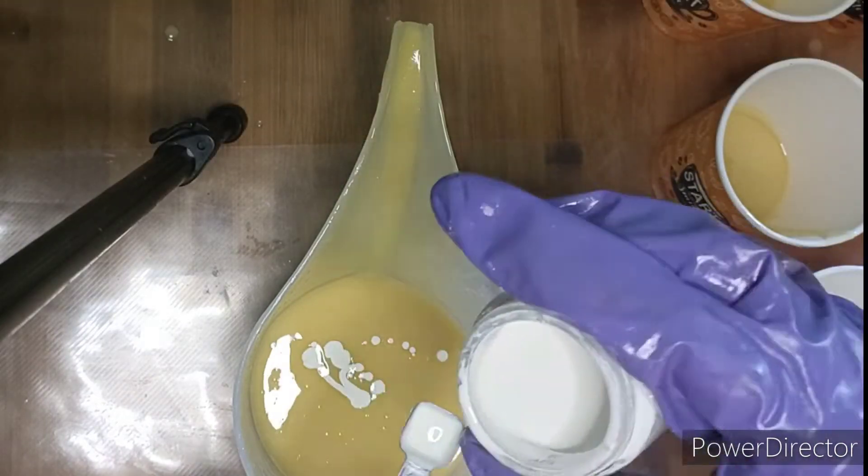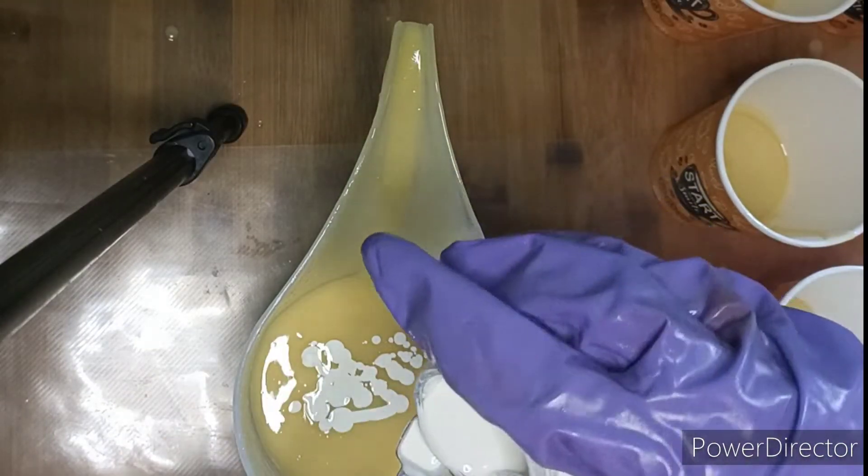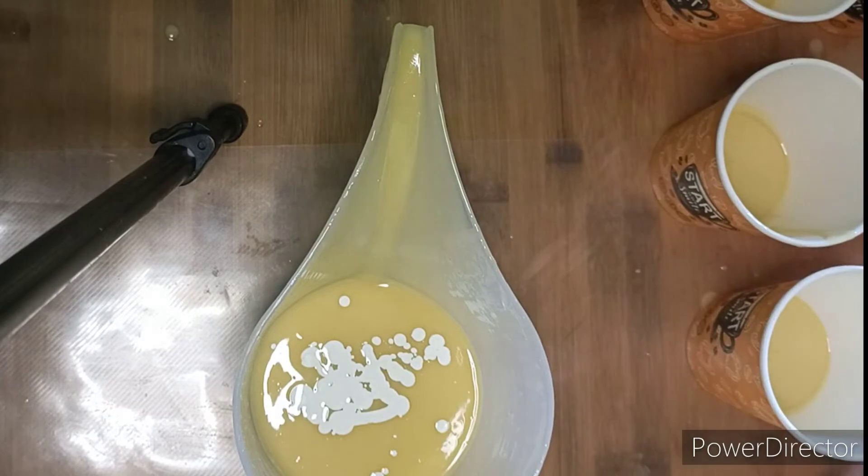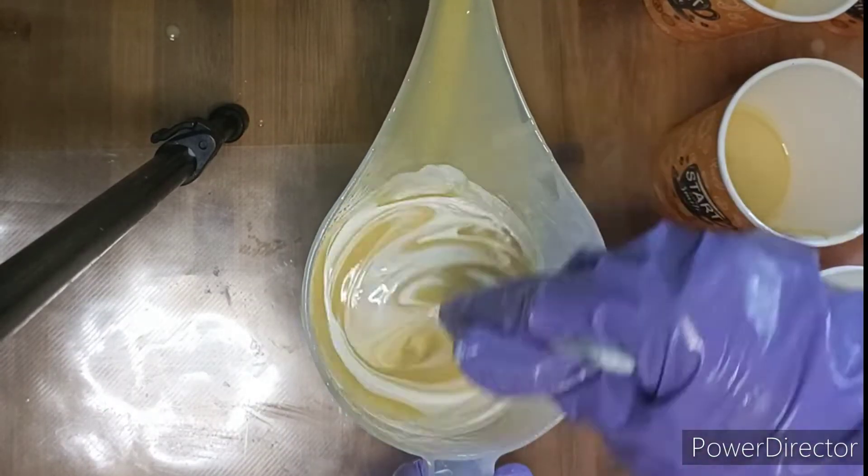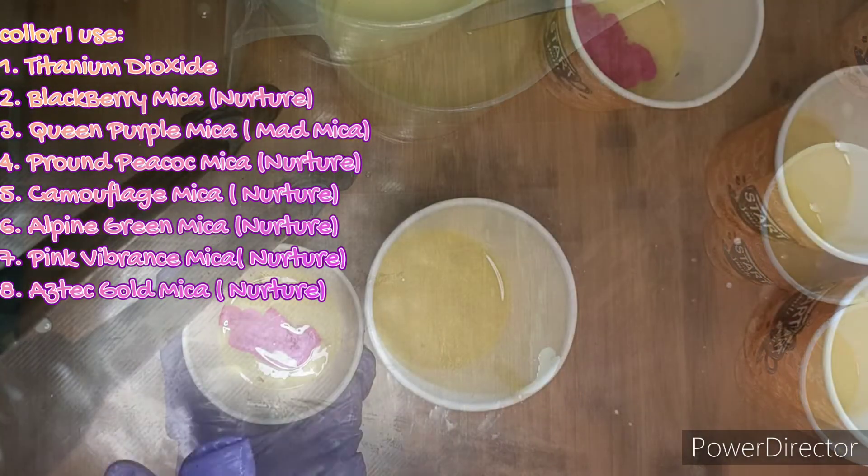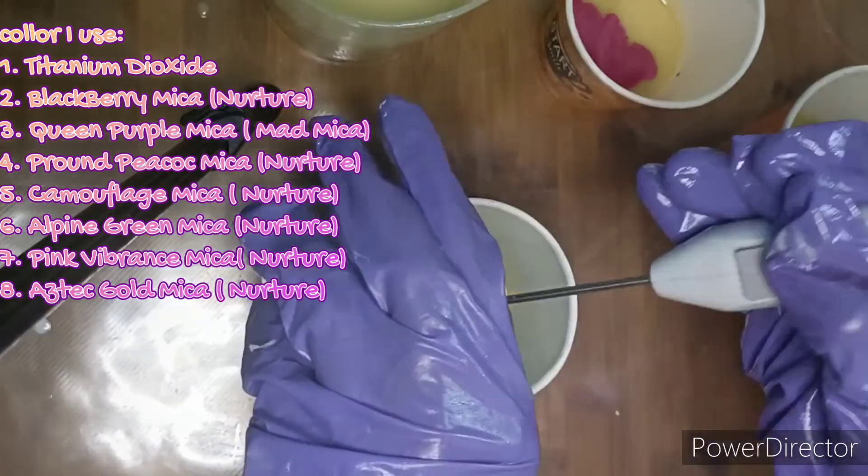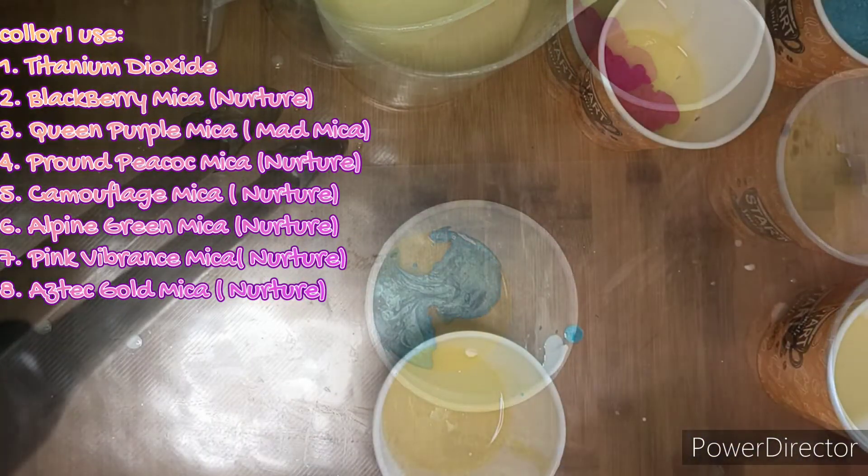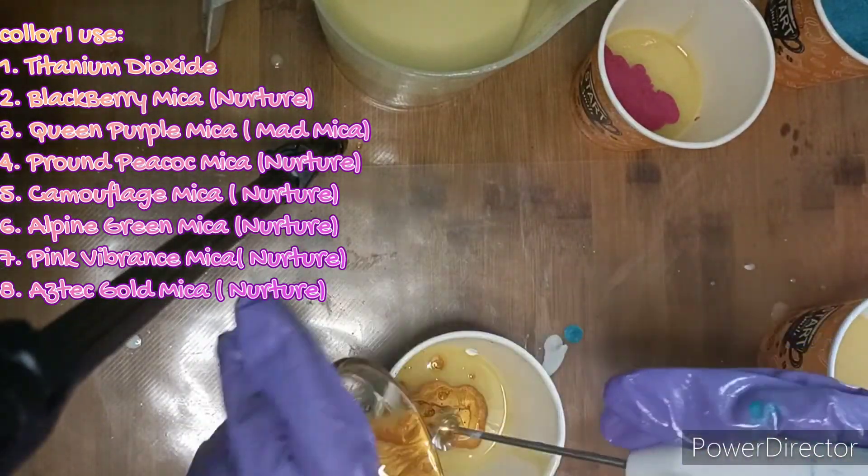After my soap batter reaches stable emulsion, I divide it into eight parts and give them eight colors for my soap design. For colorants I use titanium dioxide for white and mostly I use Nurture micas.